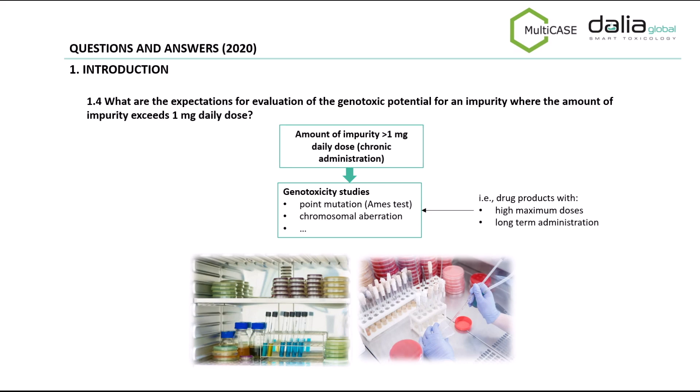For impurities present above 1 mg in the daily dose in chronic exposure products, genotoxicity studies are encouraged. For example, the Ames test or the chromosomal aberration test could be considered. This scenario could occur in drug products with high maximum doses and long-term administration, where even a low percentage of impurity would represent more than 1 mg.